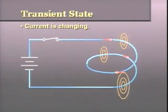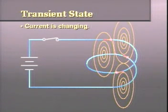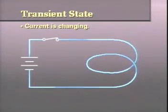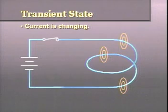During the transient state, current is changing, the magnetic field is moving, and counter electromotive force is induced into an inductor.